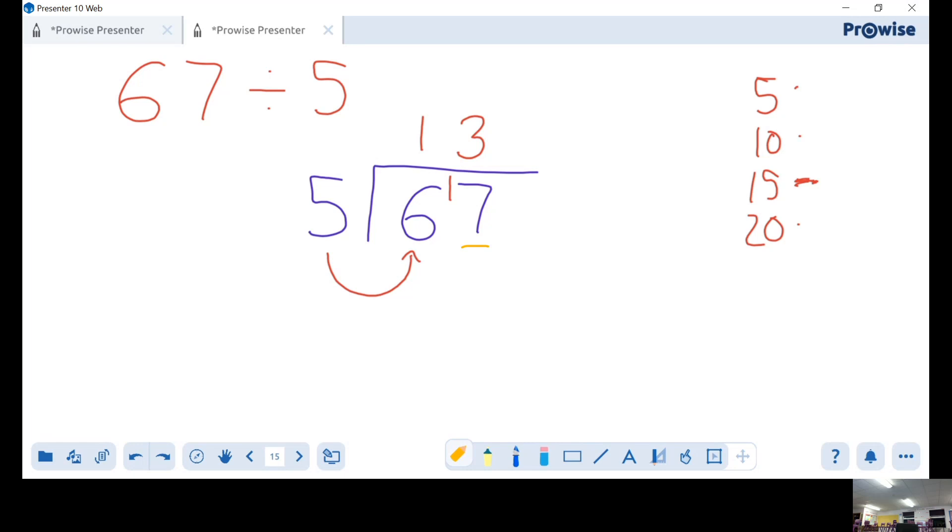But our number here is 17, so again I've got 2 left over. Now what we can do is we can just write 13, and because we've got 2 left over we can write remainder 2. So that's what's remaining - we call it a remainder of 2.